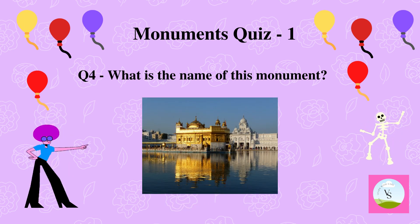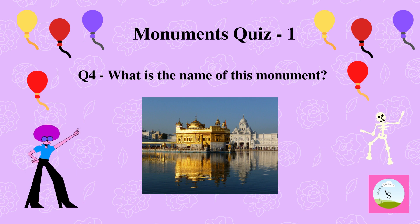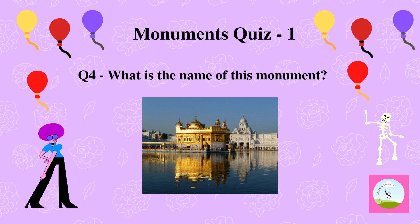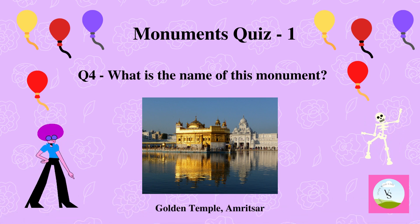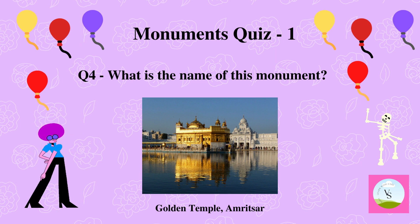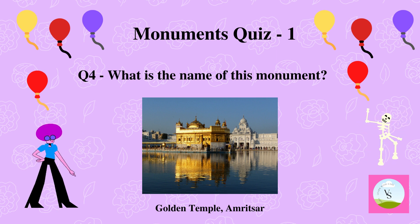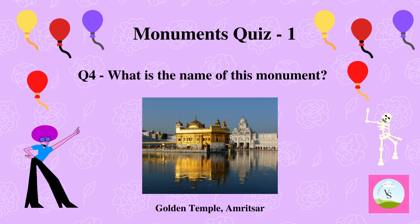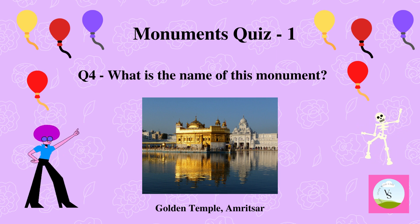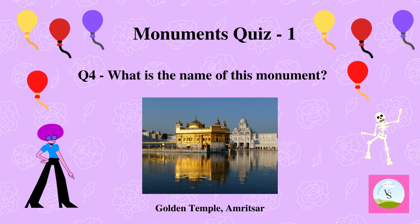Question 4. What is the name of this monument? Question 5. The name of this monument is Golden Temple. It is a holy place for Sikhism and it is located in Amritsar.